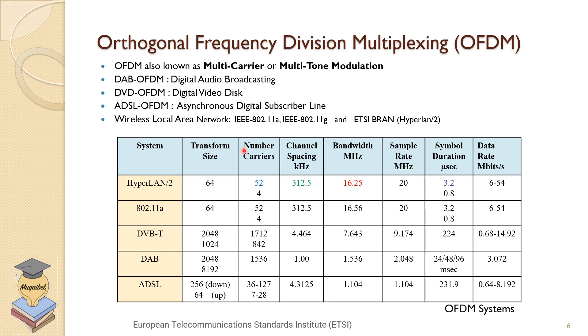I'll share with you some of the relations between these numbers. Let's take the first one, the HyperLAN. We have transform size, we have the number of carriers N, and we have the channel spacing between every channel and the other. We have also the bandwidth in megahertz, the sample rate, we have the symbol duration in microseconds, and then we have the data rate. I have colored these numbers so that you can trace. So if we take the entire bandwidth and divide it by the number of the carriers, you get the channel spacing. For example, here, if you take the bandwidth in red 20.25 and divide by the channel spacing, you get 52, or vice versa. You divide by 52, you get 0.3125. So these are related.